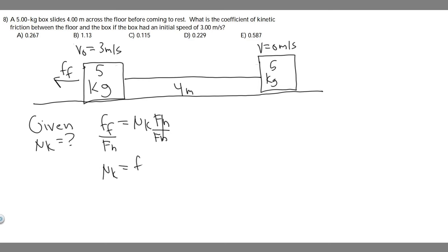So mu sub k is going to equal f sub f, force of friction, divided by mg. The mass is 5 times g, which is 9.81. What we've got to do is solve for the force of friction.